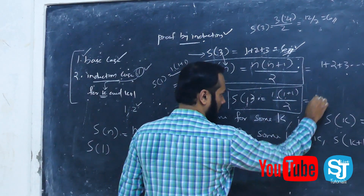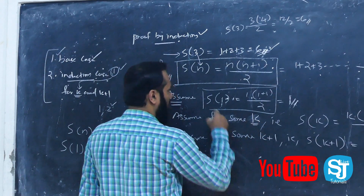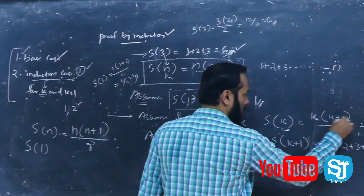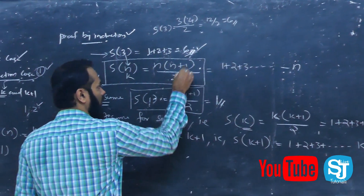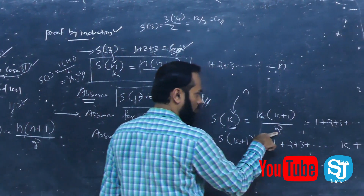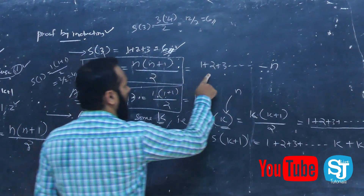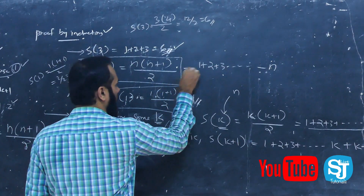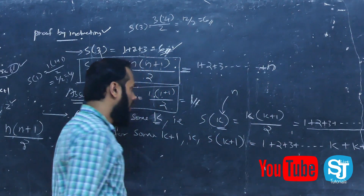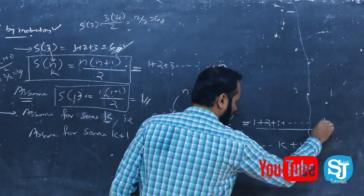Assume for some k that S of k equals k into k plus 1 by 2. That is the induction hypothesis: 1 plus 2 plus 3 plus ... plus k equals k(k+1)/2.